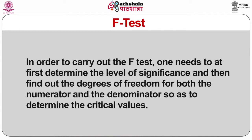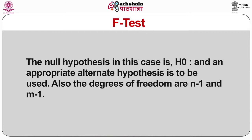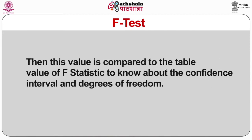In order to carry out the F-Test, one needs to first determine the level of significance and then find out the degrees of freedom for both the numerator and denominator so as to determine the critical values. The null hypothesis in this case is H0, and an appropriate alternate hypothesis is to be used. The degrees of freedom are n minus 1 and m minus 1. This value is then compared to the tabulated value of F-statistics to know about the confidence interval and degrees of freedom.